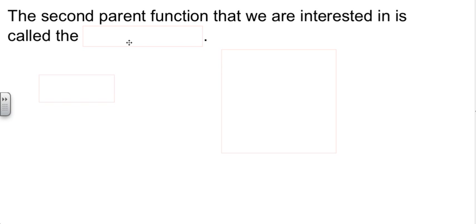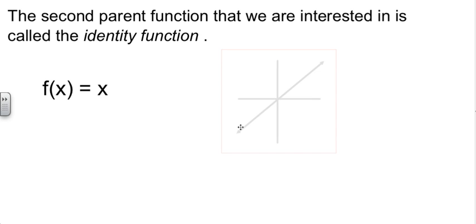The second one is called the identity function. And it's also pretty dull. f of x is equal to x. Whatever value I tell you, the function equals the same value. If I say f of 2, it equals 2. If I say f of 8, it equals 8. The identity function is a diagonal line. It's y equals x. So those two are pretty boring functions.